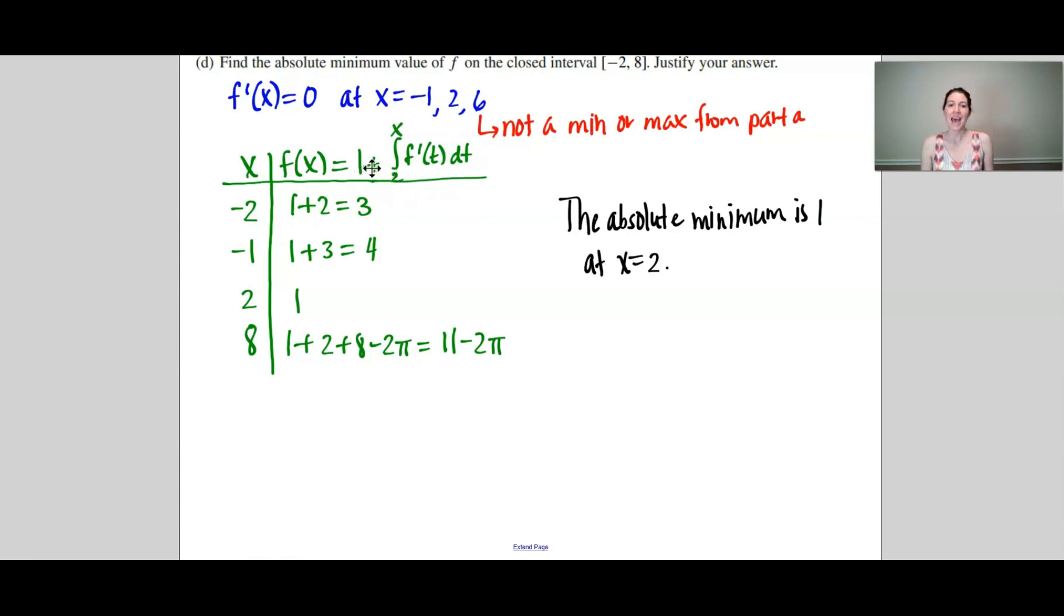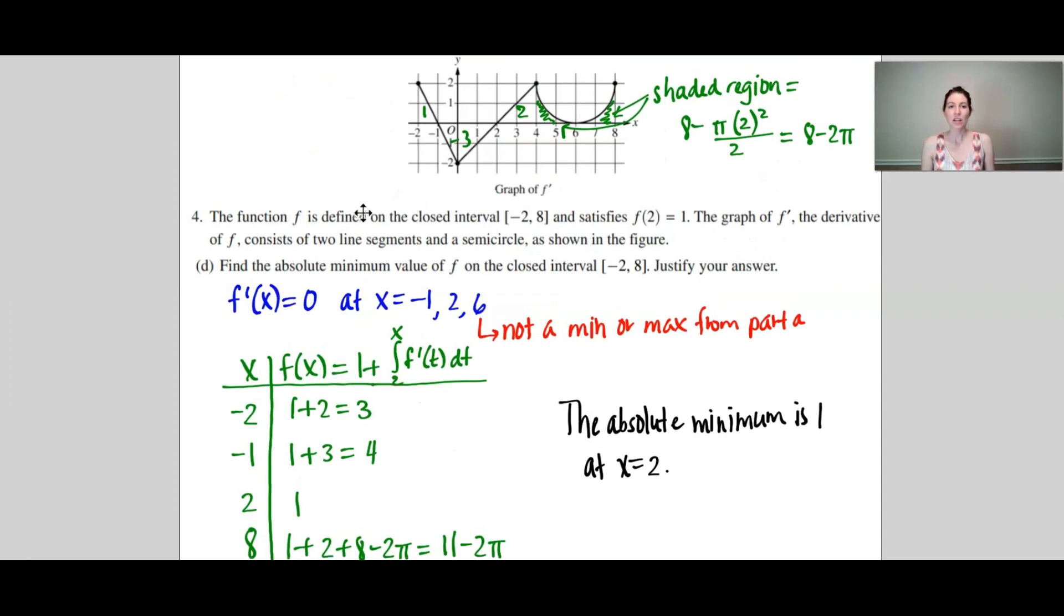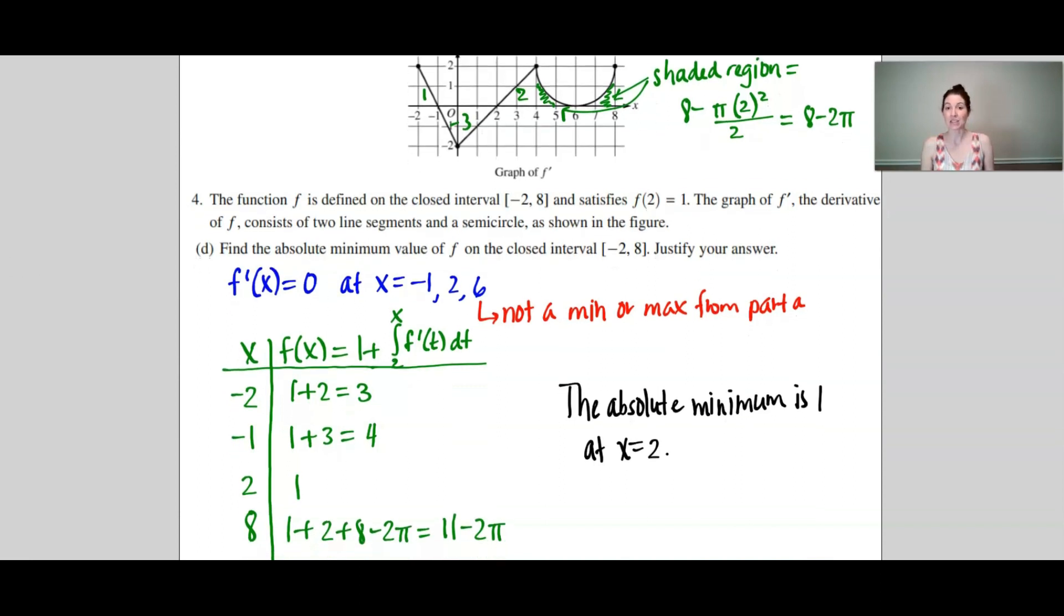So I'm taking 1 and then I'm adding the area under the curve from 2 to, in this case, negative 2, and the area under the f prime curve. So what I did up here, as you can see, I took the area from each region and wrote it in. This one, a little bit tricky to get the area under the curve here. I had to take the rectangle, which had an area of 8, and subtract this semicircle right here, which was pi 2 squared divided by 2. So this shaded area in green is 8 minus 2 pi. I had to use that for 8 when I plugged it in.